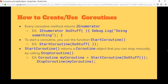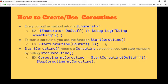The coroutine itself is just a regular function that returns IEnumerator. As you see with this DoStuff example, it just returns IEnumerator and you can do whatever you can in a normal function. To actually kick off the coroutine, you call a special function tied to MonoBehaviour called StartCoroutine. All you do is call StartCoroutine with your coroutine function and it's already working — already kicked off and running.